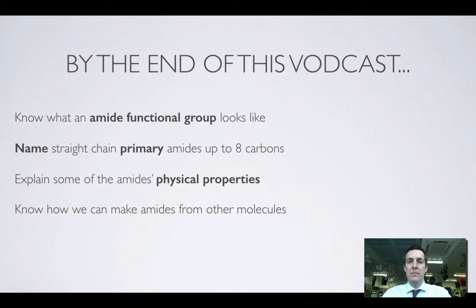So, just to recap, hopefully the things that you have learned now are what an amide functional group looks like and how we name them up to eight carbons. We didn't go right up to eight, but the prefixes are just the same as for the alkanes. And we've looked at the usual physical properties and we've also seen what molecules we need to make an amide.